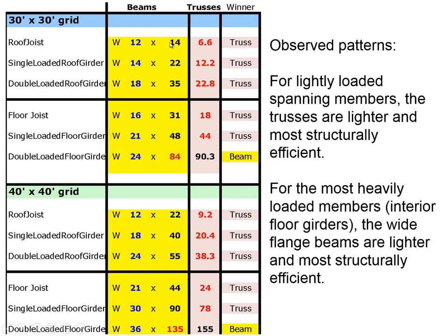You'll notice 6.6 is a lot less than 14, which explains why we almost never use wide flange beams in the roof of a building — we'll always use trusses or open web joists because they are lighter. The only reason to use a beam would be to minimize building height. I've listed the winner in terms of the lightest element, highlighted in red: 22.8 is less than 35, and 18 is less than 31. Trusses proved lighter and more structurally efficient for all the lightly loaded situations, up through the single-loaded floor girder.